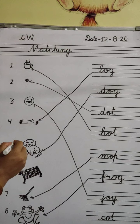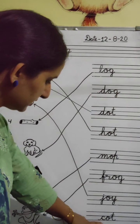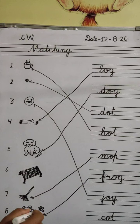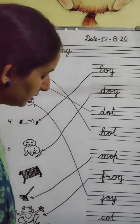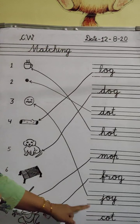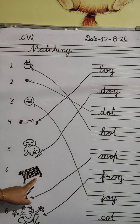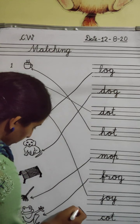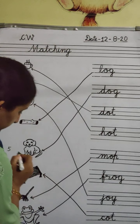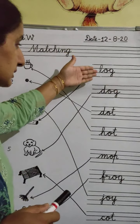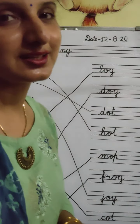We will match like this. Next is C-O-T — Cot. Cot means a small bed or cot. Now we will do matching with the Cot picture. Okay students, like this we are to do matching of these words with their pictures, and you are to learn the spellings also. Okay, now bye bye.